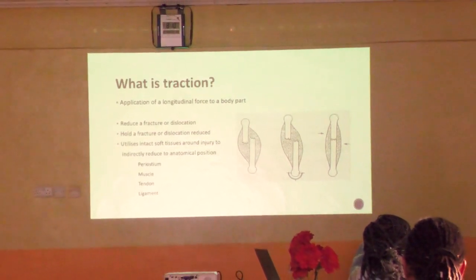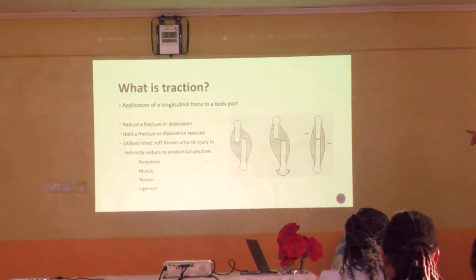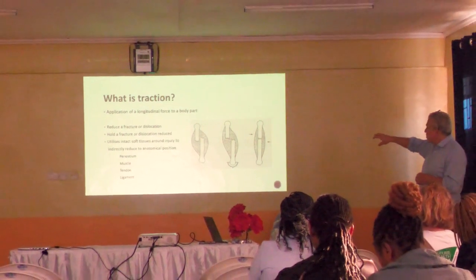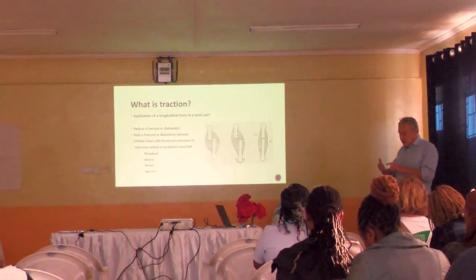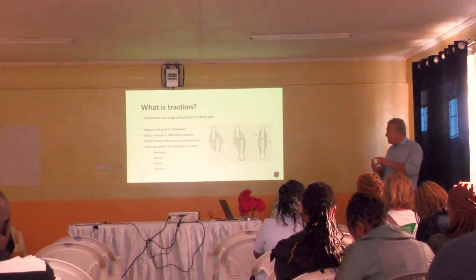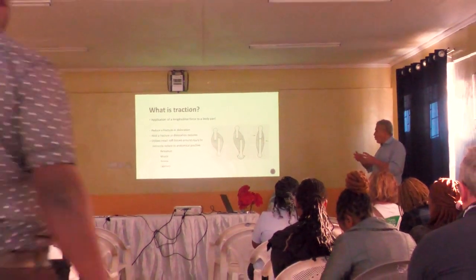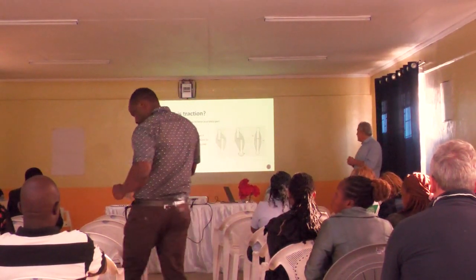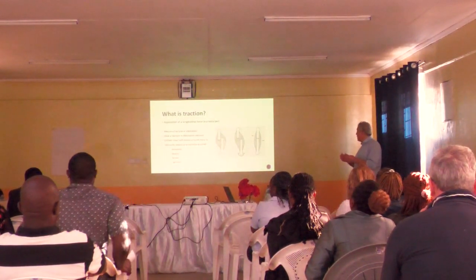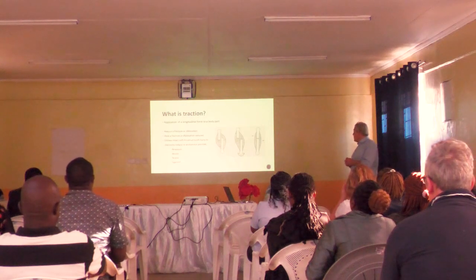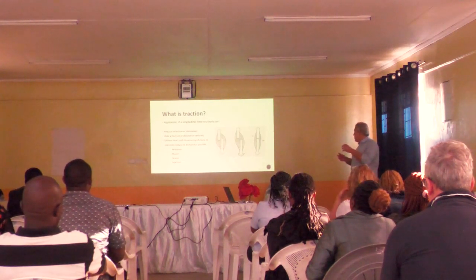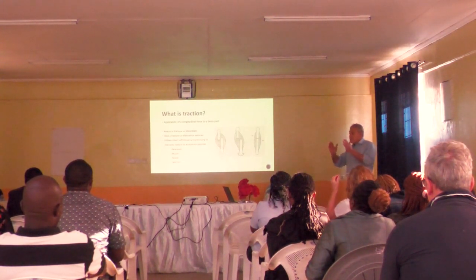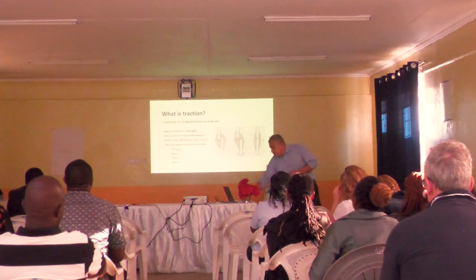On the left-hand side of the picture you can see the broken bone, and all around it the soft tissues - periosteum, muscle, tendon, ligament - are suddenly loose. The nerves are loose, the veins and arteries are loosed. When you pull on it, those soft tissues go taut and they mould the fracture back into the right position.